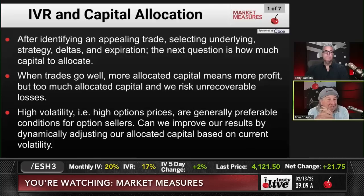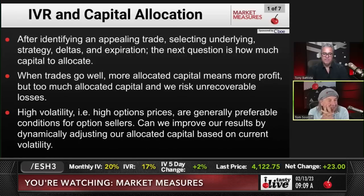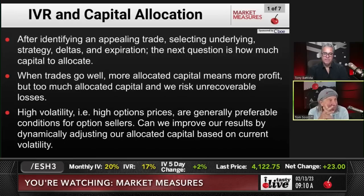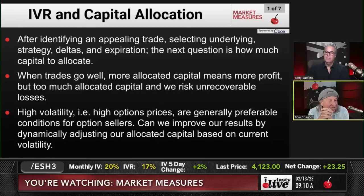So after identifying an appealing trade, selecting an underlying strategy, deltas, expiration, all of the above, the next question is: how much money do you allocate? When trades go well, more allocated capital means more profit. But too much allocated capital and we risk unrecoverable losses. For example, high volatility and high option prices are generally preferable conditions for option sellers. You want a lot of uncertainty — best conditions, most noise. Can we improve our results by dynamically adjusting our allocated capital based on current volatility?